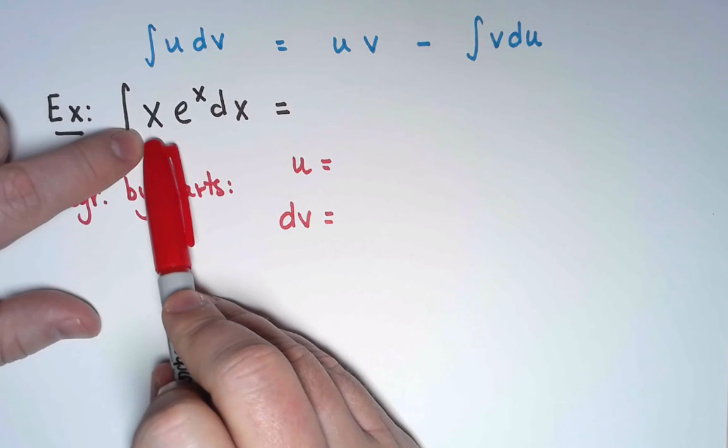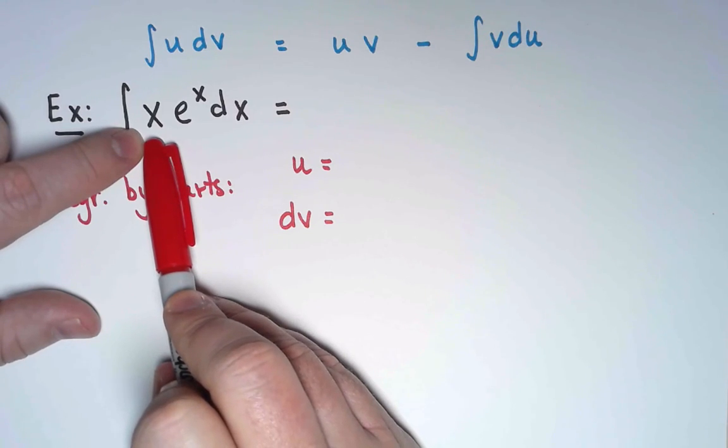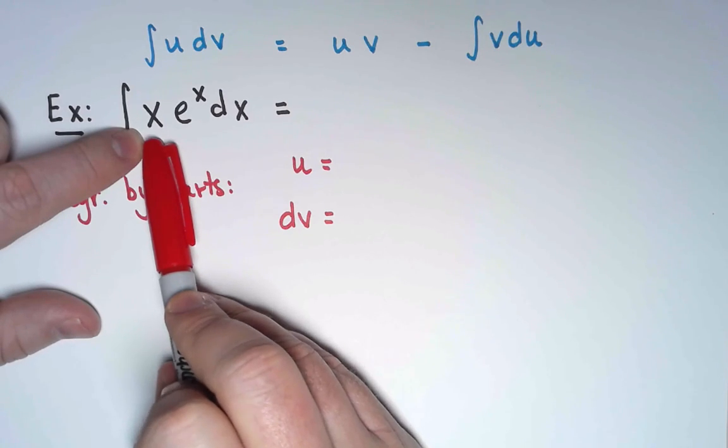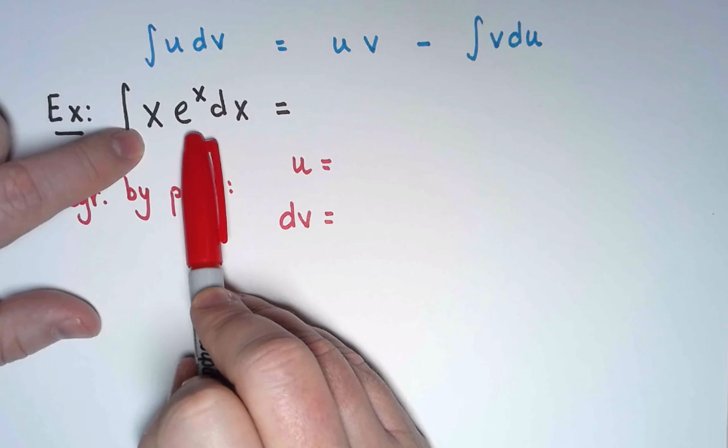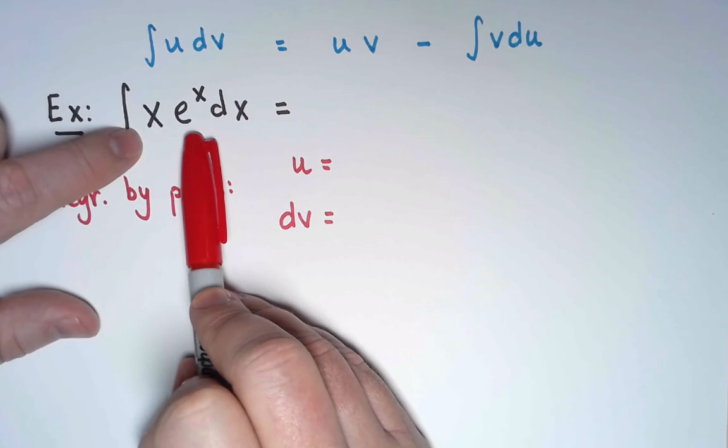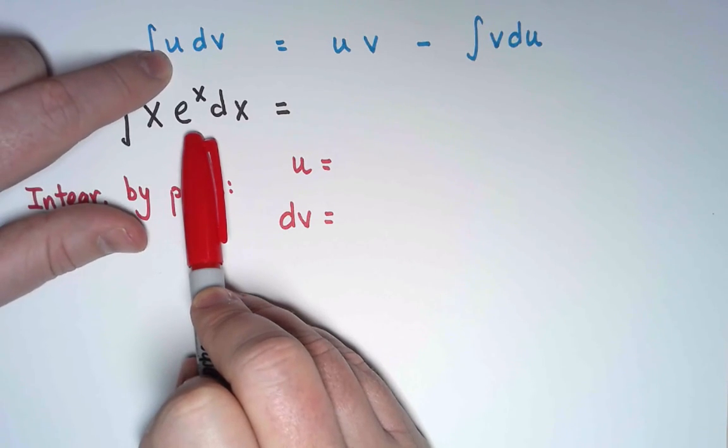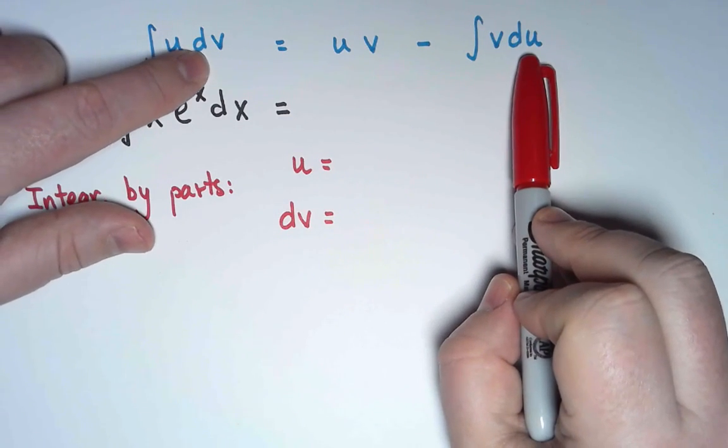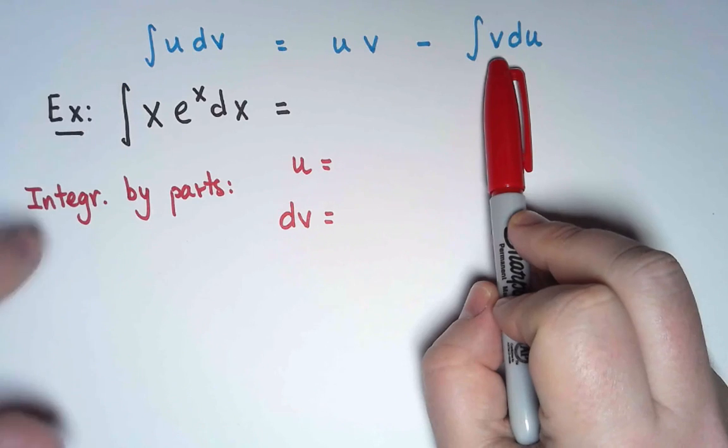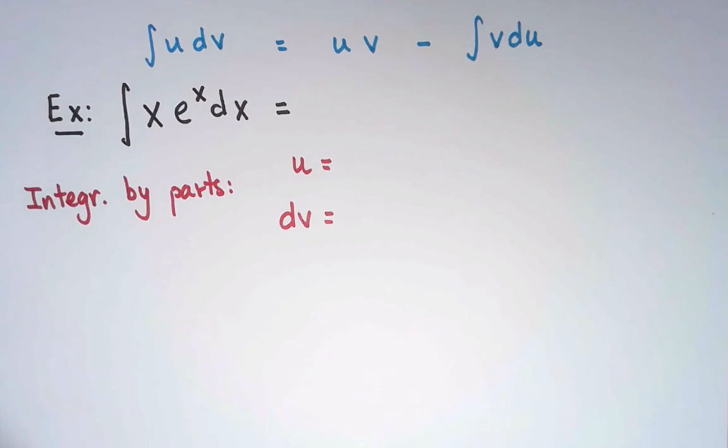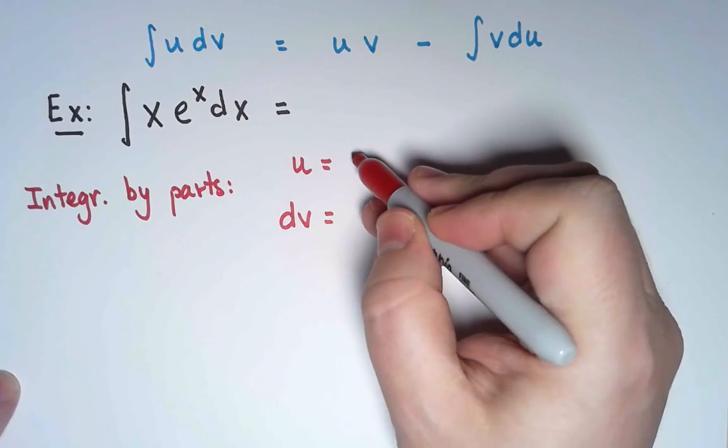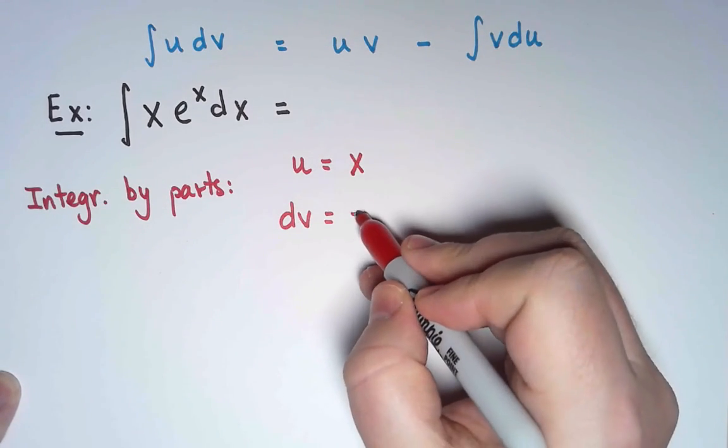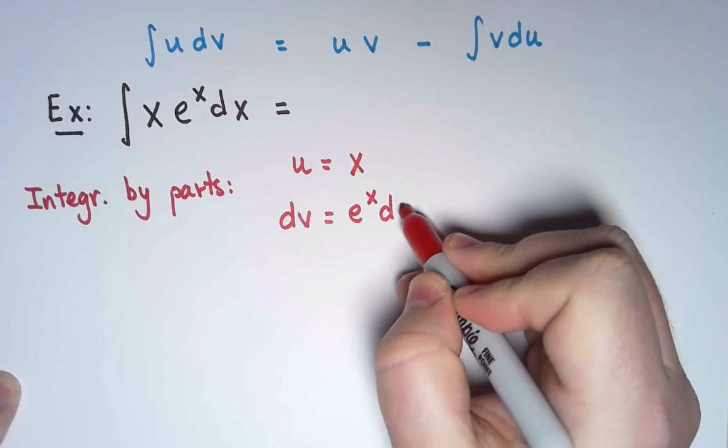x. If I take the derivative of x, it will be simpler. If I take the antiderivative, it will be harder. e to the x. I don't care if I take the derivative or the antiderivative. It stays the same. Notice that the function in u will be replaced with its derivative, and the function in dv will be replaced with its antiderivative. So if my goal is for the second integral to be as simple as possible, it's a good idea to choose u to be x and dv to be e to the x dx.